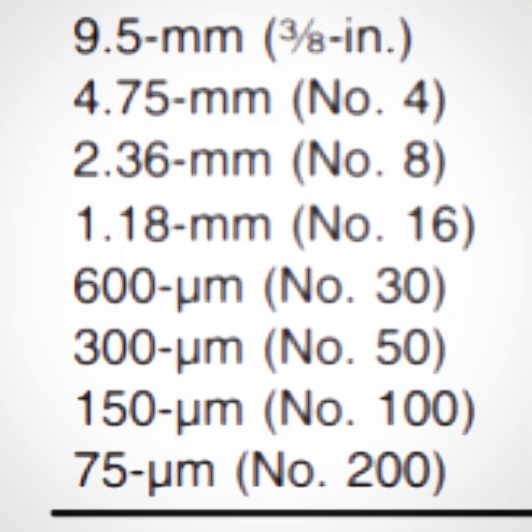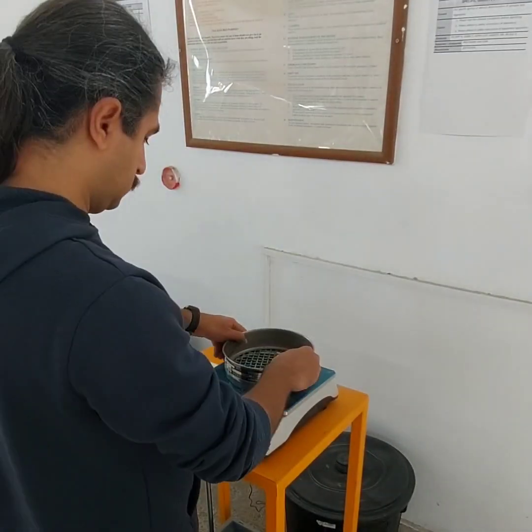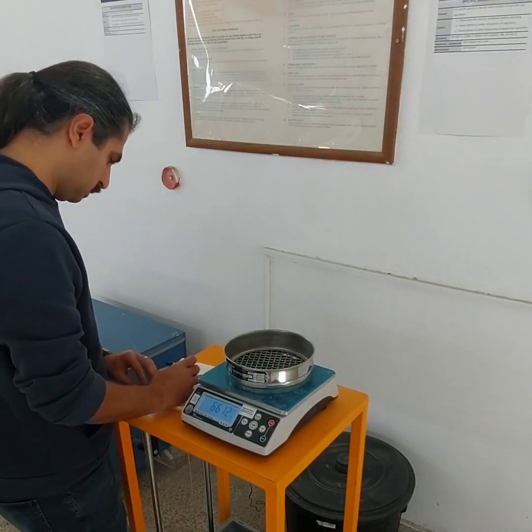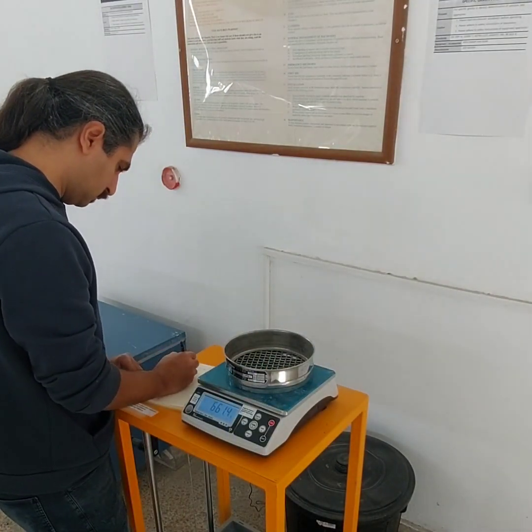These are the sieves that we are going to use, based on ASTM C33. But before we start sieving, we have to weigh the empty sieves and record their weights.